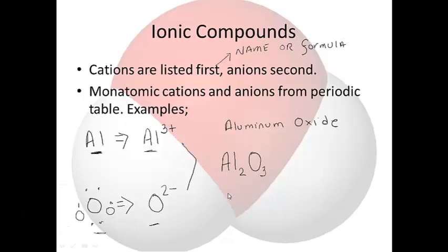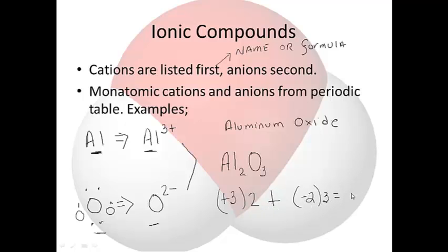Let me check my work. Each aluminum is +3 and I have two of them: 2 times +3 is +6. Each oxygen is -2 and I have three of them: 3 times -2 is -6. Adding them up gives zero. That confirms the formula Al₂O₃ for this ionic compound.